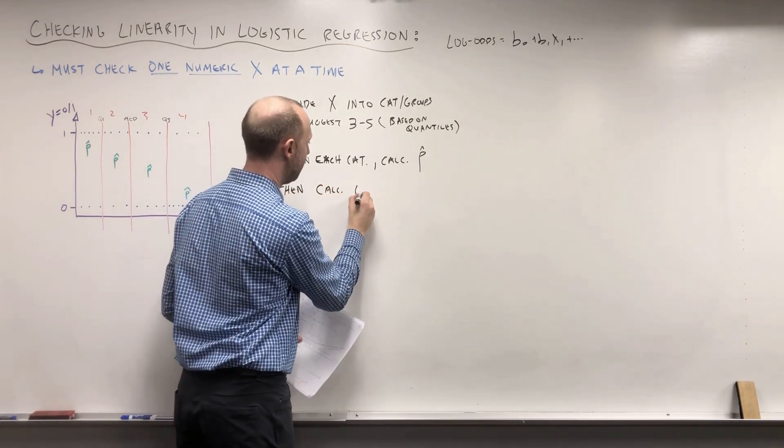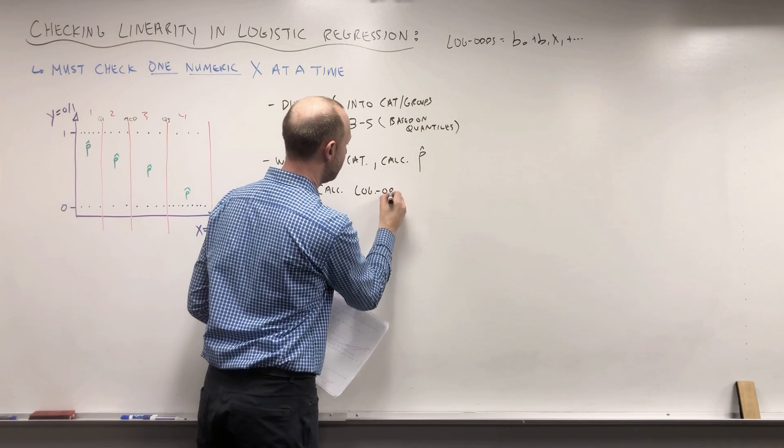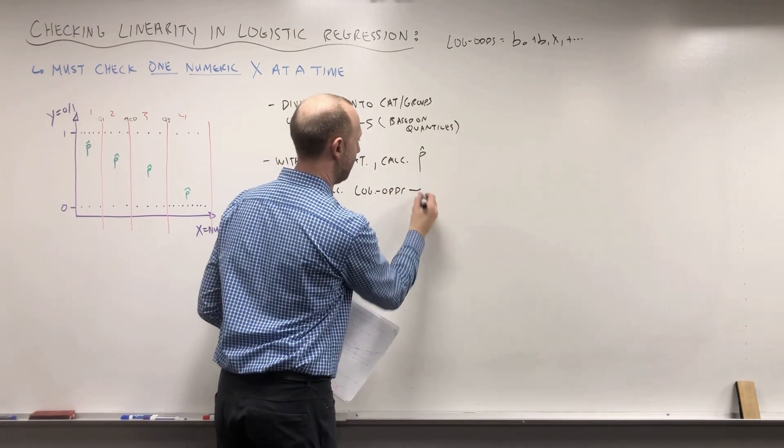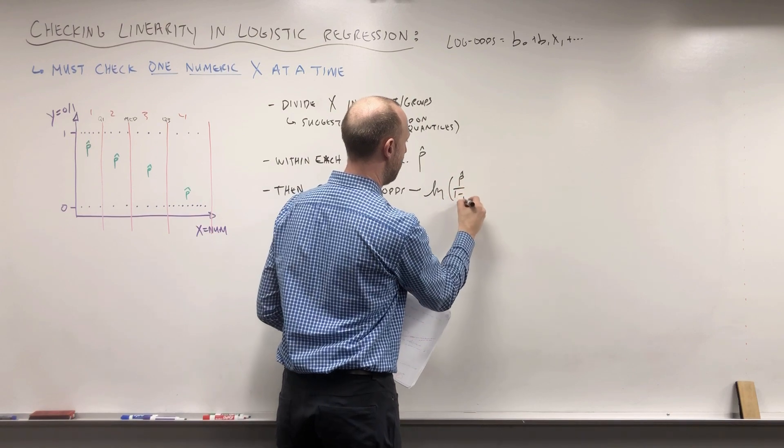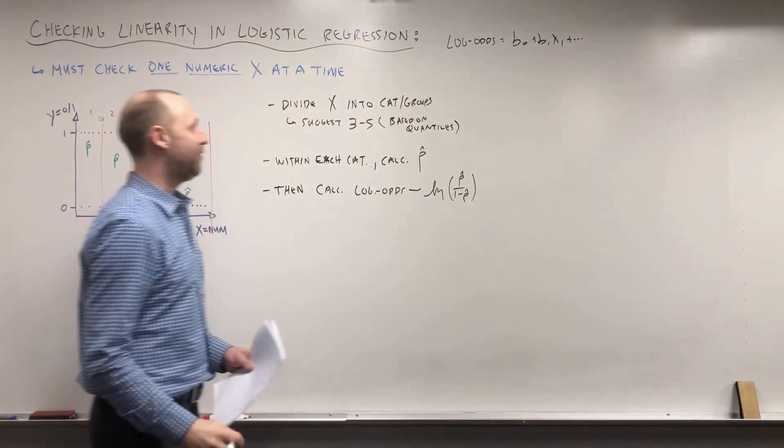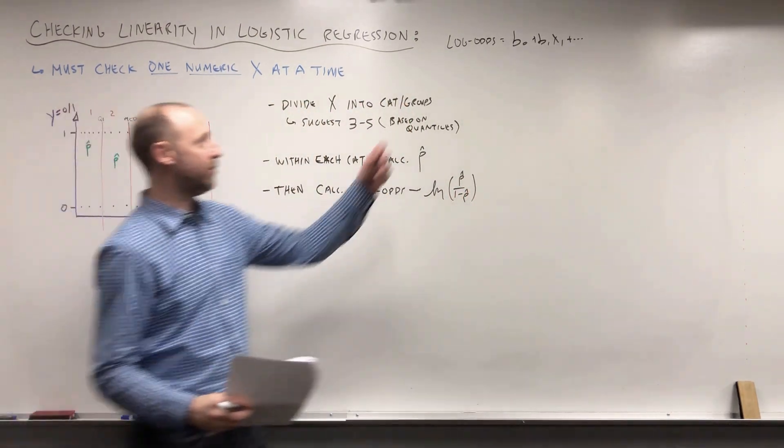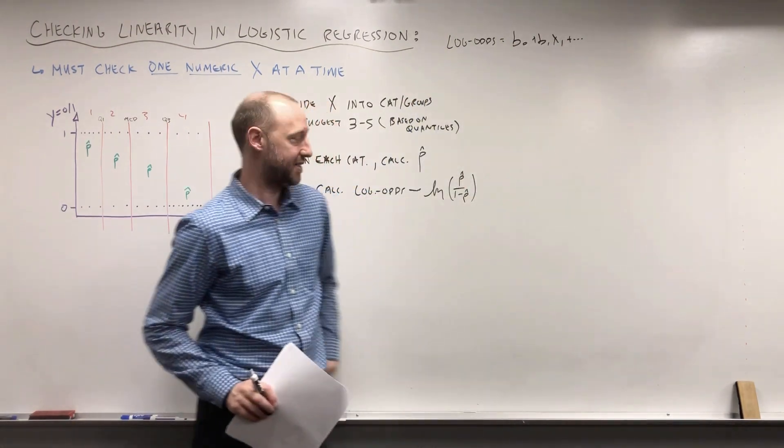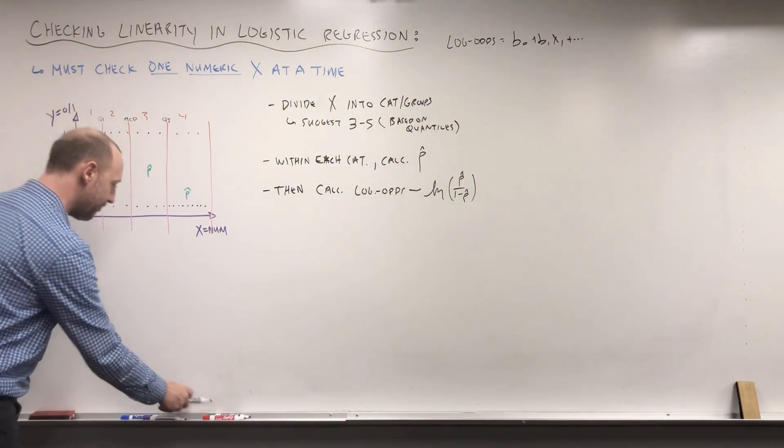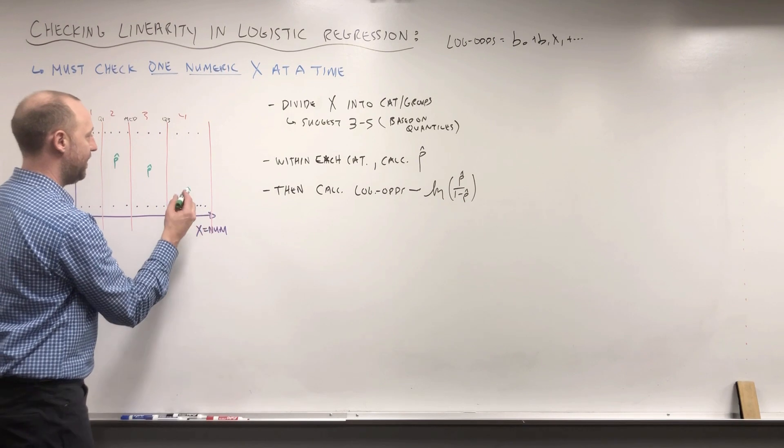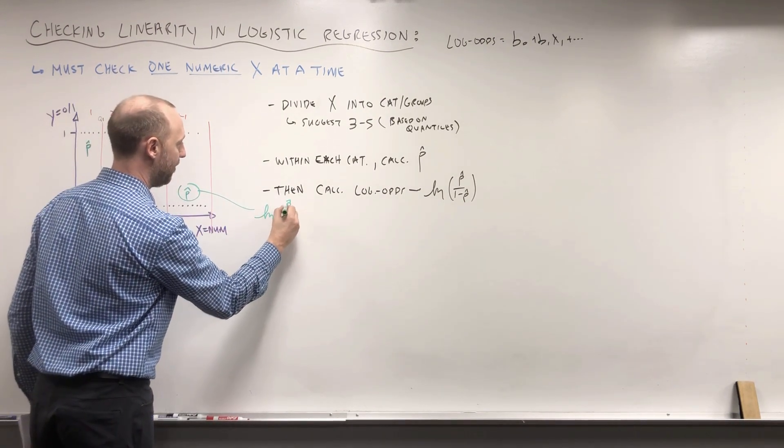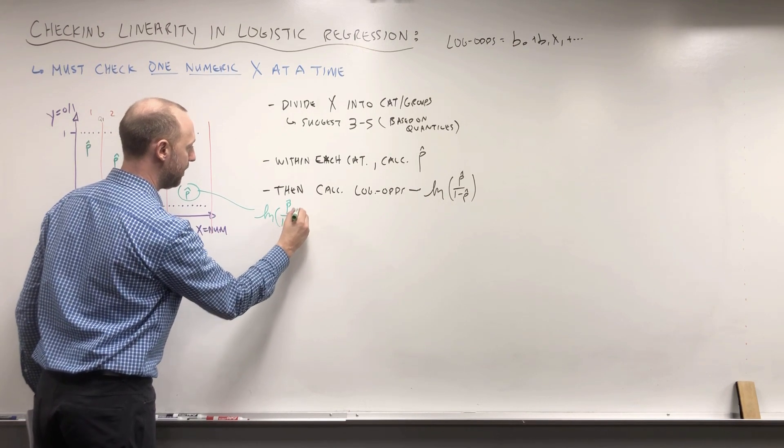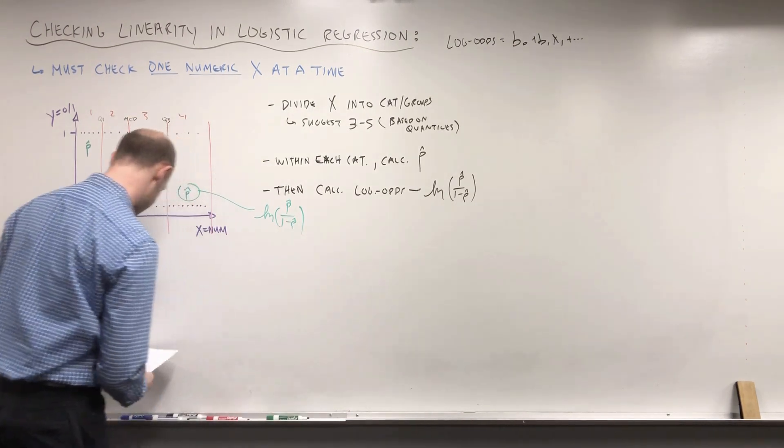Then calculate the log odds, take the log of the p over one minus p. And again, if you remember, we assume the relationship between the log odds and the x is linear. So for each of these, we're going to take the log of p over one minus p, so convert them to log odds.